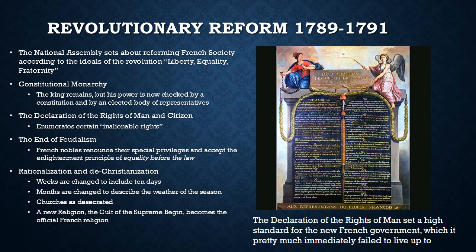They composed the Declaration of Rights of Man, which enumerated certain inalienable rights belonging to all French men and citizens. The end of feudalism occurred early in the Revolution when French nobles renounced all of their special privileges and accepted the Enlightenment principle that all men are equal before the law. There was also a strange cultural phenomenon in which they began getting rid of traditional aspects of European society and rationalizing them — for example, weeks went from being seven days to ten days because it was believed that ten is a more rational number than seven.